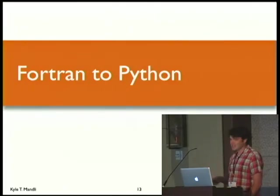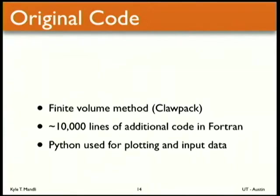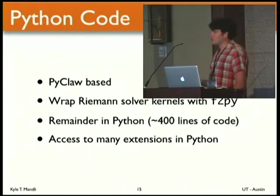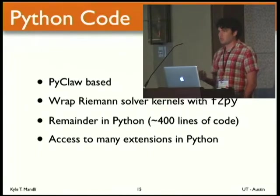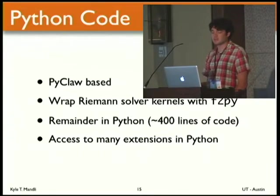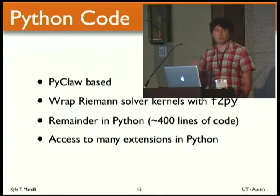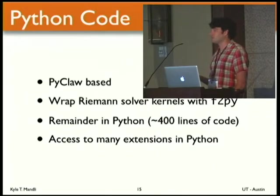This is the more interesting part for this conference. The original code was all in Fortran — a finite volume method based on Clawpack and GeoClaw — approximately 10,000 lines of additional Fortran code to get the multi-layer equations to work. We did have Python for plotting and data manipulation. The Python code we ported to is based on PyClaw, an implementation of Clawpack in Python. The main work is done in Riemann solvers, which were left in Fortran and wrapped using F2Py. The remainder was ported into Python and came out to about 400 lines of code.